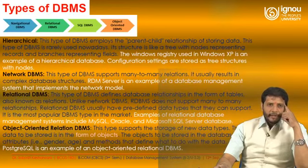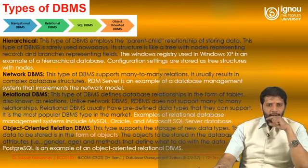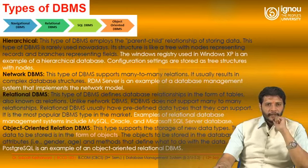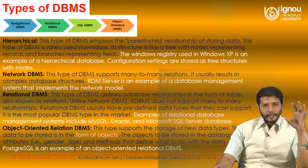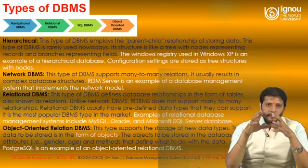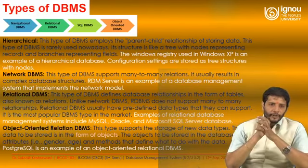Types of database management systems include navigational database, relational database, SQL-based DBMS, and object-oriented DBMS. The hierarchical DBMS employs a parent-child relationship for storing data in a tree structure, where nodes represent configuration and settings — similar to how a tree collects data.